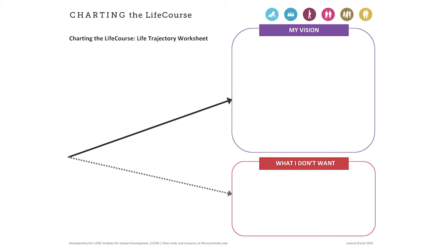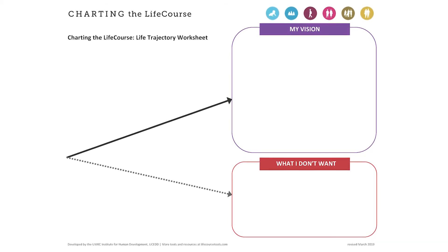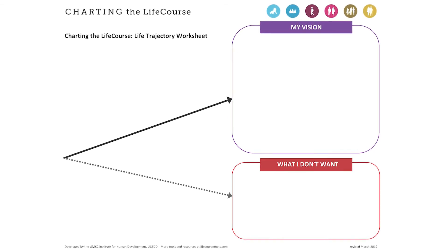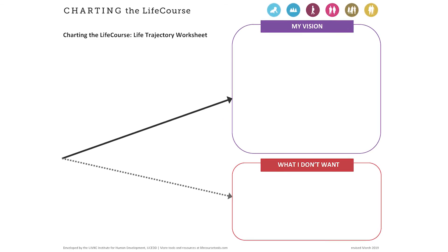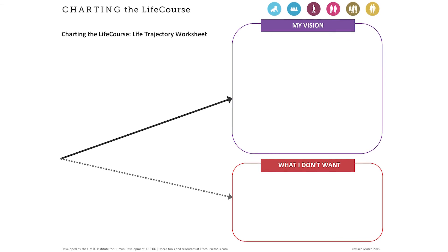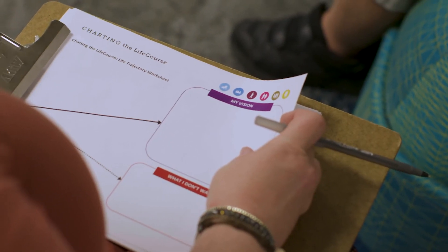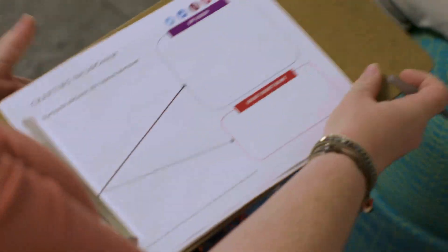The Life Trajectory Worksheet is a useful tool to map out meaningful goals and identify what steps need to be taken or have already been taken to support an individual's vision for a good life. You can use this worksheet as a pre-planning tool to better understand what services and supports could be discussed during the Person-Centered Service Planning Meeting, or you can use it at the Person-Centered Meeting to discuss goals, services, and support.